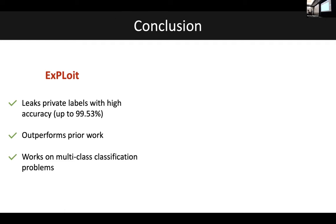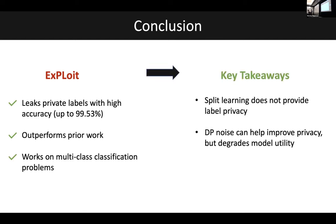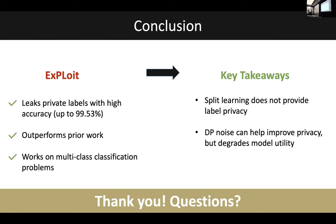To conclude, we propose a high-accuracy label leakage attack called EXPLOIT on split learning. Our work significantly outperforms other prior works in this field and works on multiclass classification problems. The key takeaway is that split learning really does not provide any label privacy. While defenses such as differential privacy can help, they often come at a cost of significant degradation in model utility. That brings me to the end of my talk — thank you for your attention.